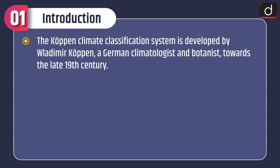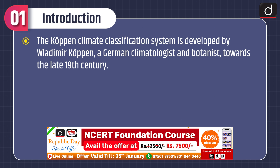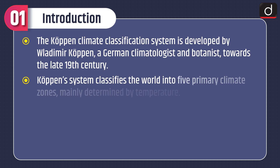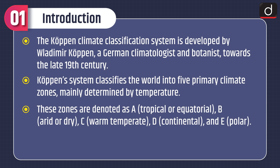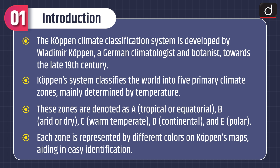Moving on to the introduction of the topic. The Koppen Climate Classification System was developed by Vladimir Koppen, a German climatologist and botanist, towards the late 19th century. Koppen's system classifies the world into 5 primary climate zones, mainly determined by temperature. These zones are denoted as A – Tropical or Equatorial, B – Arid or Dry, C – Warm Temperate, D – Continental, and E – Polar. Each zone is represented by different colours on Koppen's maps, aiding in easy identification.